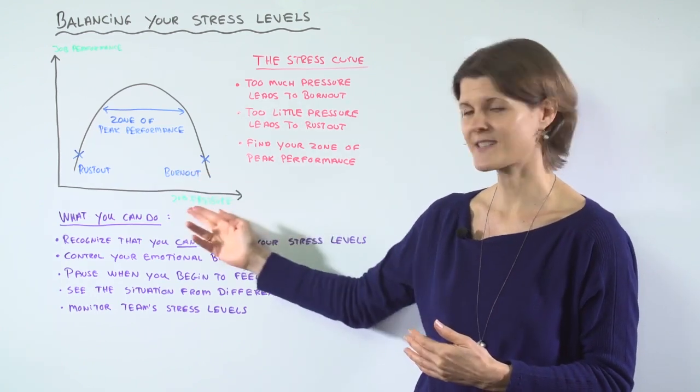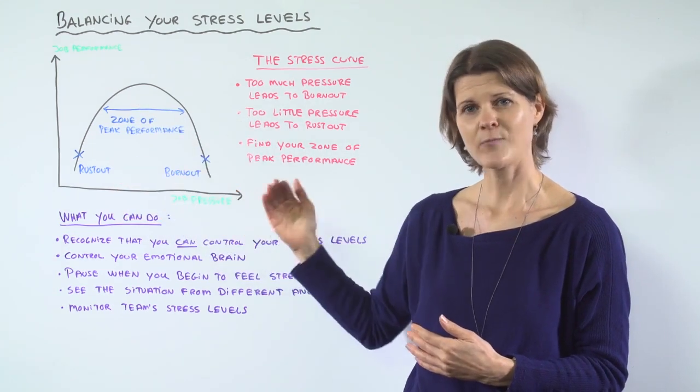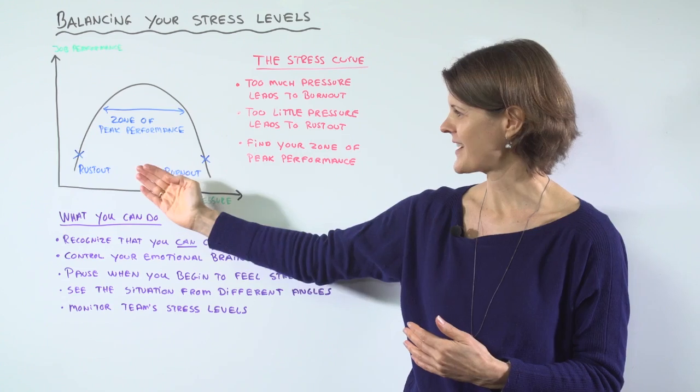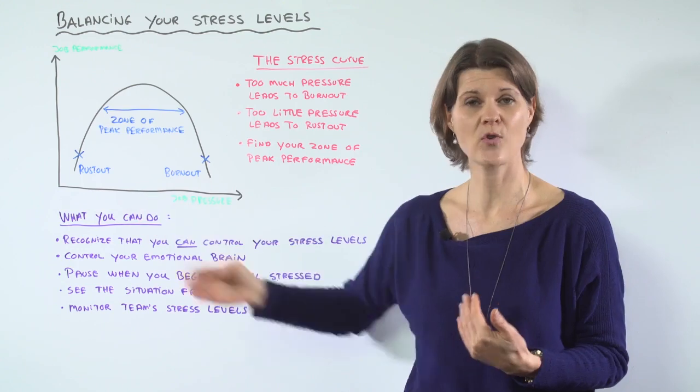On the horizontal axis we've got your job pressure and on the vertical axis job performance. On the left-hand side there is very little job pressure and your performance is also quite low.